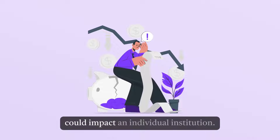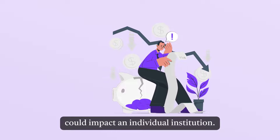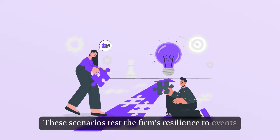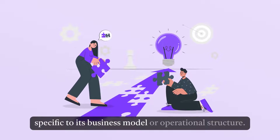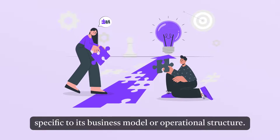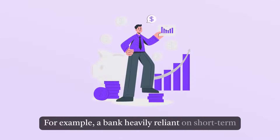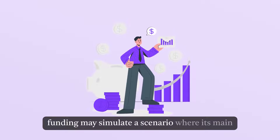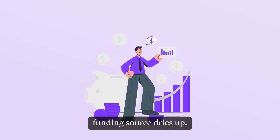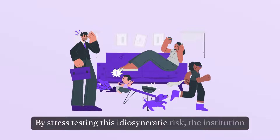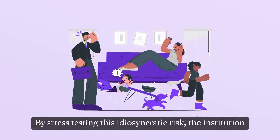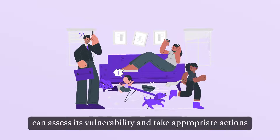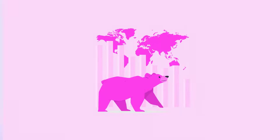Idiosyncratic scenarios are tailored to specific risks that could impact an individual institution. These scenarios test the firm's resilience to events specific to its business model or operational structure. For example, a bank heavily reliant on short-term funding may simulate a scenario where its main funding source dries up. By stress testing this idiosyncratic risk, the institution can assess its vulnerability and take appropriate actions to mitigate it.